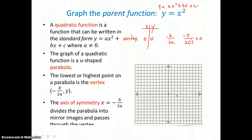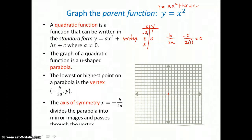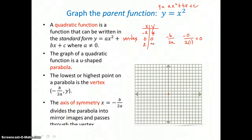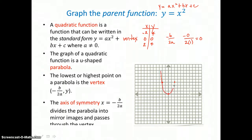Now to determine how wide to draw my u shape, I'm going to choose values for x on either side of my vertex, so I'll choose negative 2 and 2. When I substitute negative 2 in for x, negative 2 squared is 4. When I substitute 2 in for x, 2 squared is also 4. So I'm graphing negative 2, 4 in the second quadrant, and positive 2, 4 in the first quadrant, and then I'll draw my u shape through those three points.